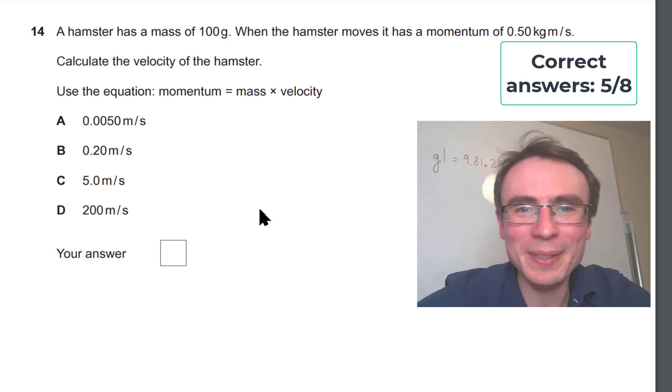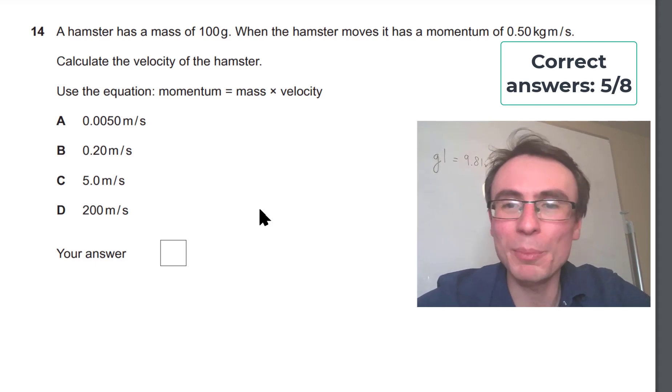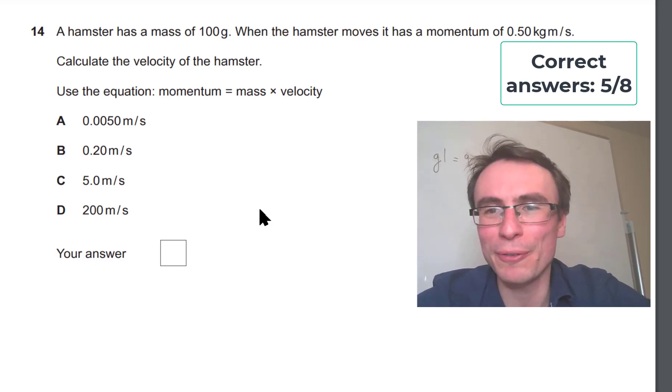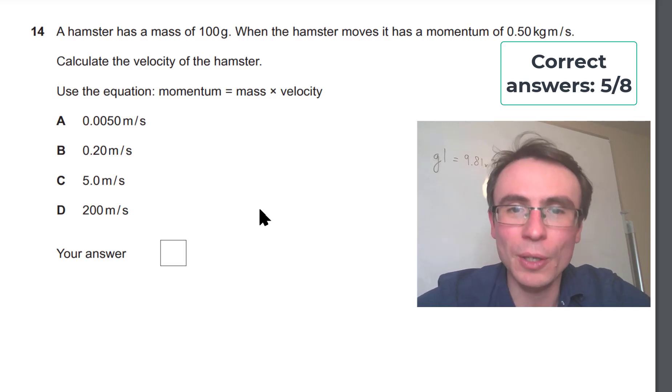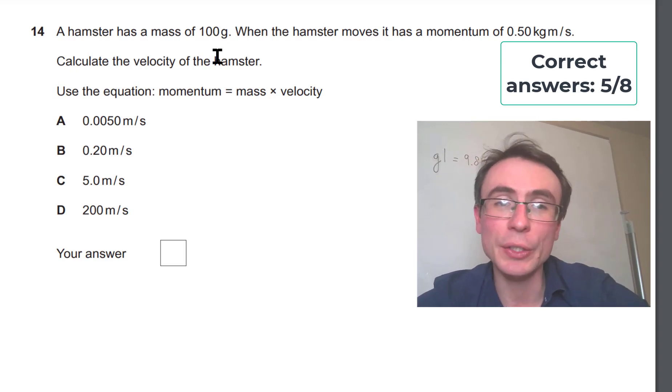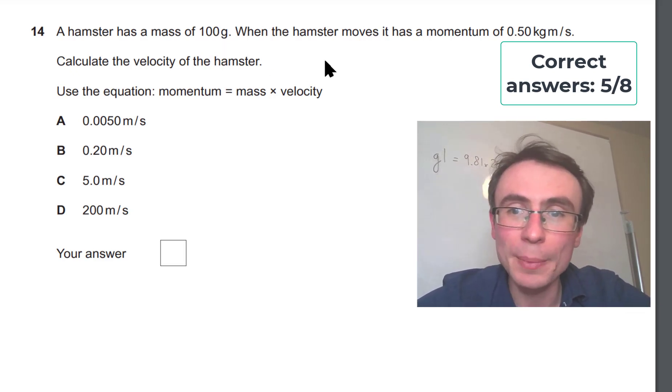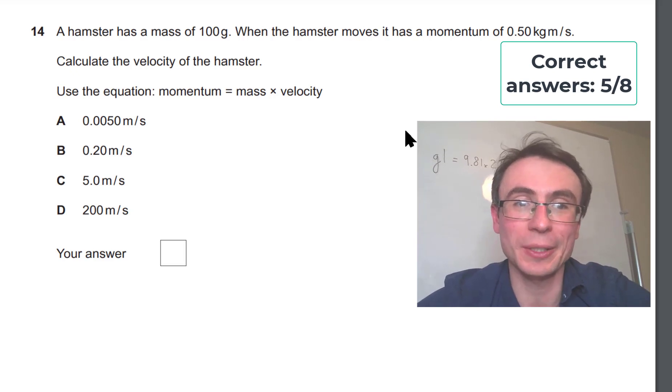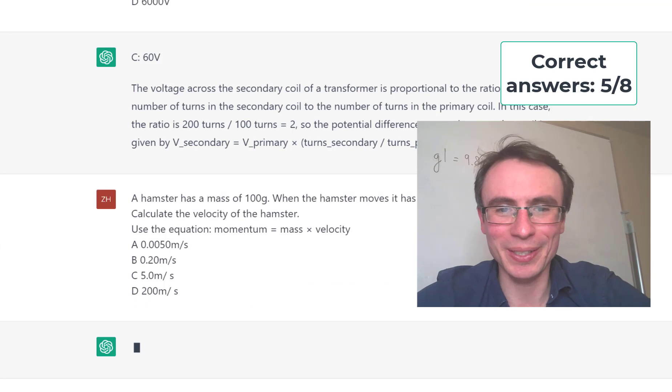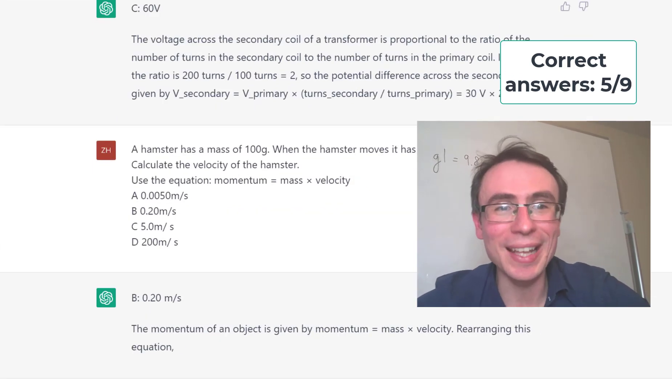Next one about a hamster. A hamster has a mass of 100 grams. When the hamster moves, it has a momentum of 0.5 kilograms meters per second. Calculate the velocity of the hamster. So we need to watch out here that our mass is given in grams and the SI unit of mass is actually the kilogram. So 100 grams is actually 0.1 kilograms. And the correct answer will be given by 0.5 divided by 0.1, which is going to give us C, 5 meters per second. And seeing how it does, and it's gotten the wrong answer yet again.